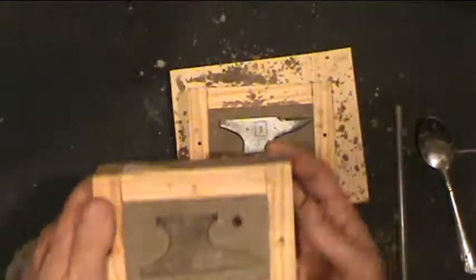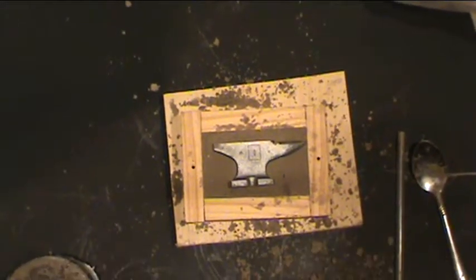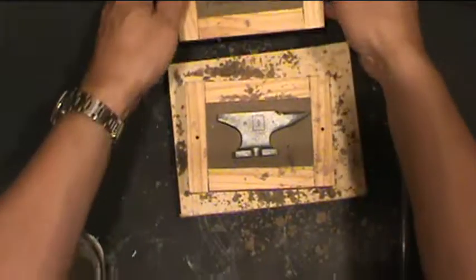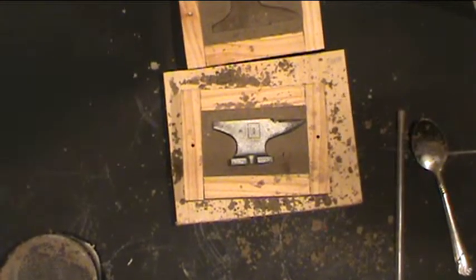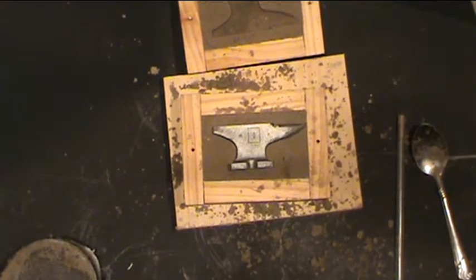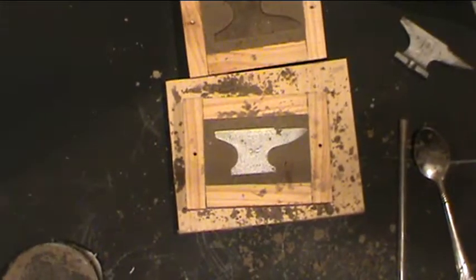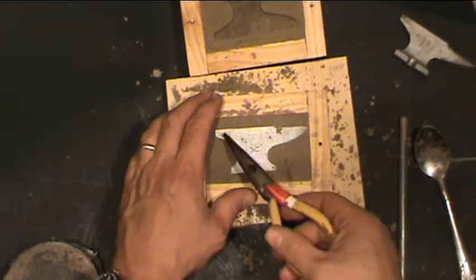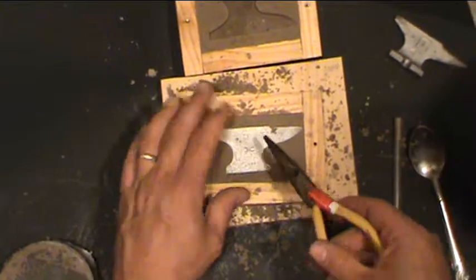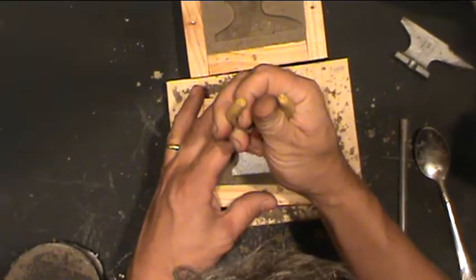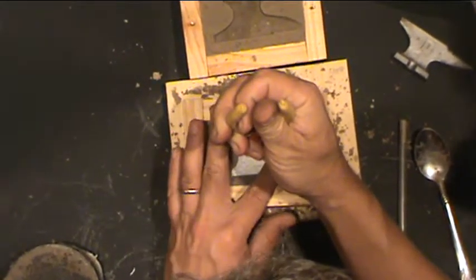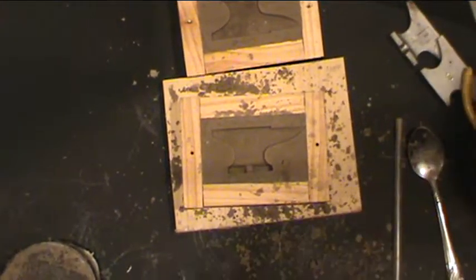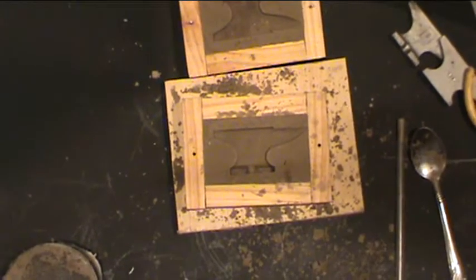The sprue is where we're going to pour the metal into the mold. So open the flask up, and it's time to get the pattern out. It helps if you give it a little tap here and there before you try to pull it out. When you make your pattern, you need to make sure that you leave some way for you to get hold of it to pull it up out of the mold. And there's our pattern pulled out. Nice mold cavity left behind.